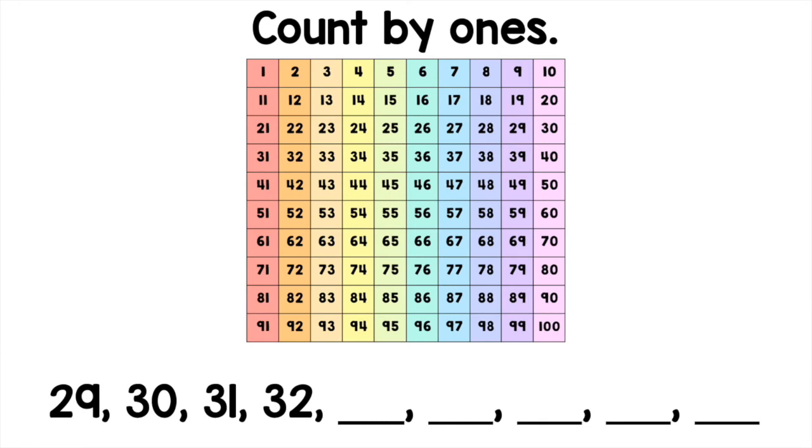On the bottom of the screen, I have the numbers 29, 30, 31, and 32. Let's find those numbers on the 100 chart: 29, 30, 31, 32.